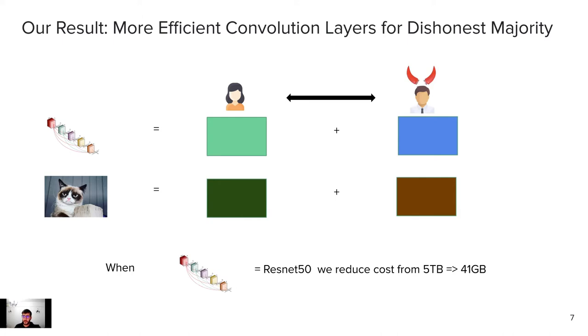We focus on the land of dishonest majority. When that model is replaced with ResNet-50, which is a big convolutional network, and we want to get the prediction on the ResNet network with a secret image, we can reduce the cost from 5 terabytes to 41 gigabytes. Classically, with known techniques, this would take around 5 terabytes of communication between the parties. But now we show that it can take around 41 gigabytes, so this is quite cool.